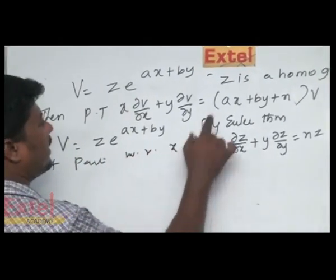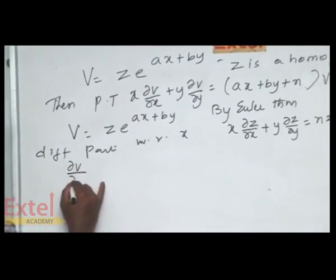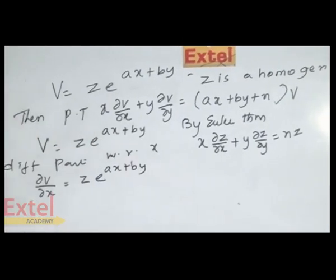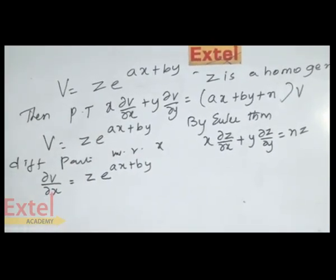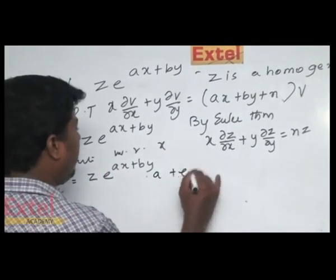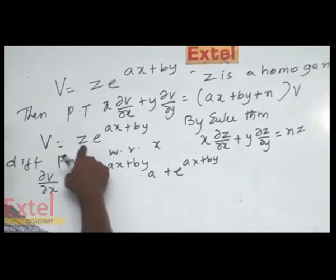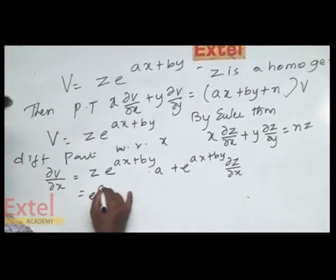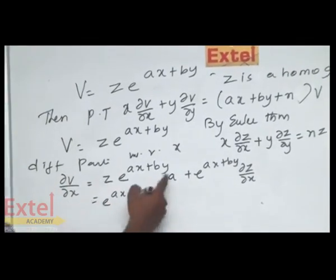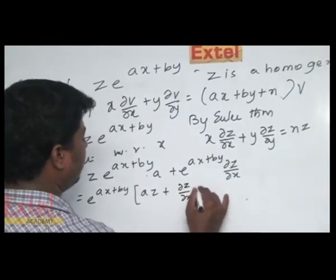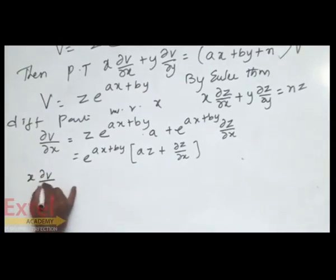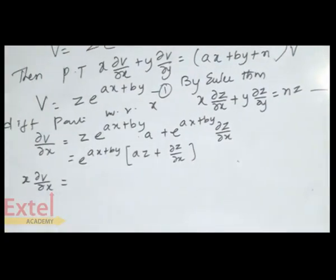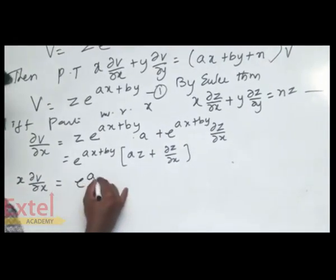Now we differentiate v partially with respect to x. We get ∂v/∂x = z·e^(ax+by)·a + e^(ax+by)·∂z/∂x, since we keep z constant when differentiating e^(ax+by) and the derivative of ax with respect to x is a. Taking e^(ax+by) common, we get e^(ax+by)·(a·z + ∂z/∂x). Multiplying by x gives x·∂v/∂x = e^(ax+by)·(a·x·z + x·∂z/∂x).